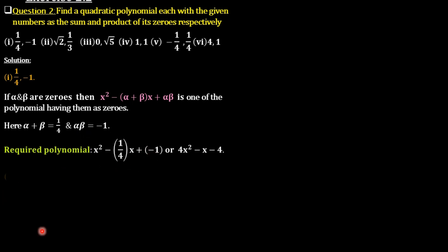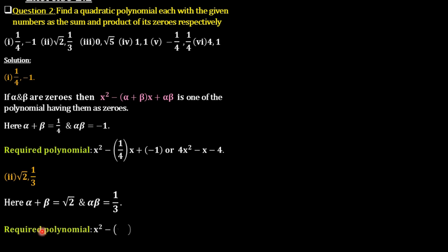Next: root 2 comma 1/3. So alpha plus beta equals root 2 and alpha·beta equals 1/3. The required polynomial is x² minus root 2·x plus 1/3. On multiplying each term by 3, we get 3x² minus 3·root 2·x plus 1.